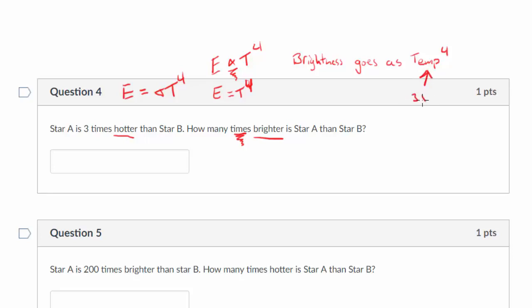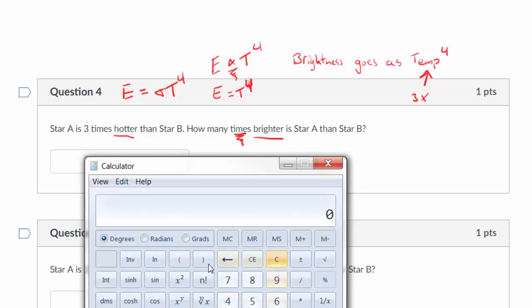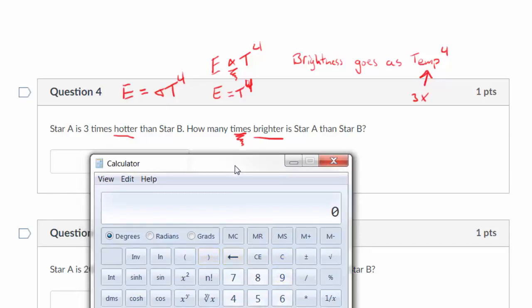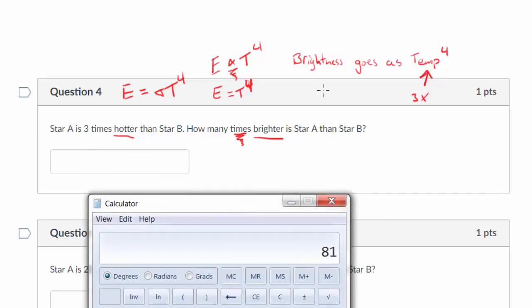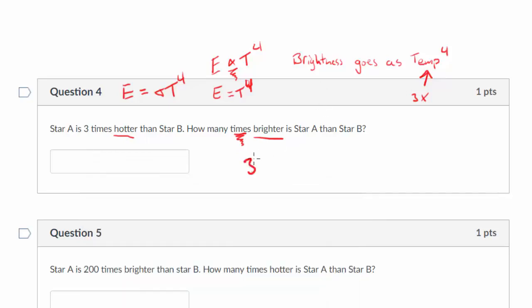So I like to think about it in terms of this. It's three times hotter. That's the temperature. If it's three times hotter, how many times brighter is it? Well, that's going to be three raised to the power of four. So three raised to the power of four, enter, is 81. It's a huge difference in brightness when you increase the temperature. So three to the power of four equals 81. And so yes, it will be 81 times brighter.